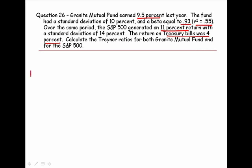The Treynor statistic is determined by taking the return on the portfolio minus the risk-free rate and dividing it by the beta of the portfolio.